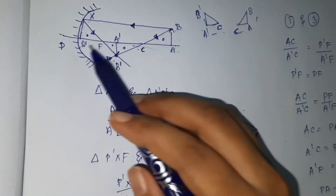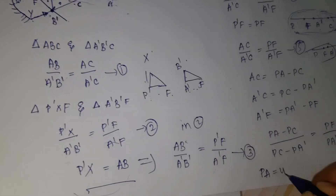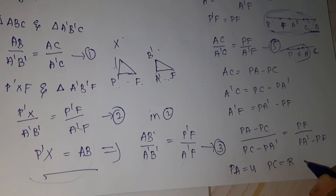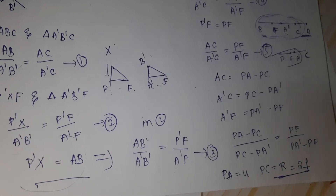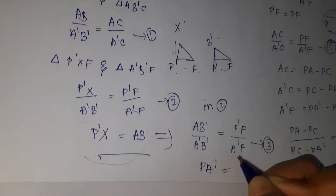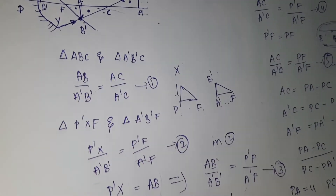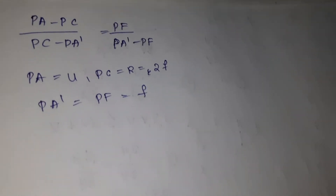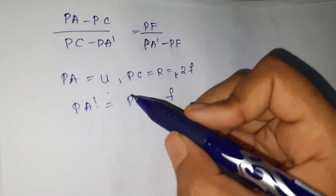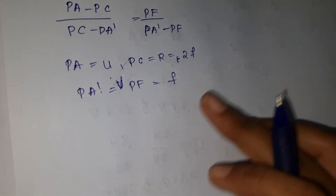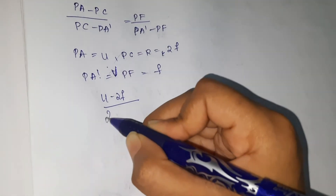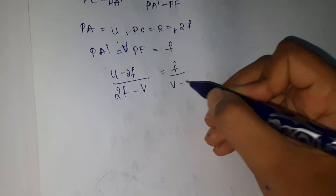PA is the object distance, so we take it as u. PC is the radius of curvature r, which equals 2f. PA' is the image distance, taken as v. Substituting all these values, we get the equation: (u − 2f) / (2f − v) = f / (v − f).